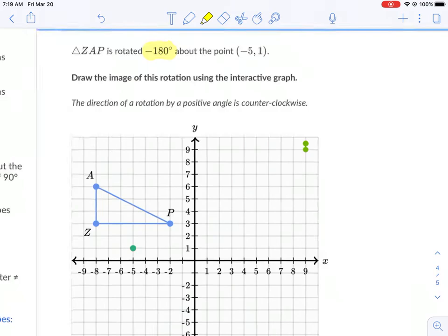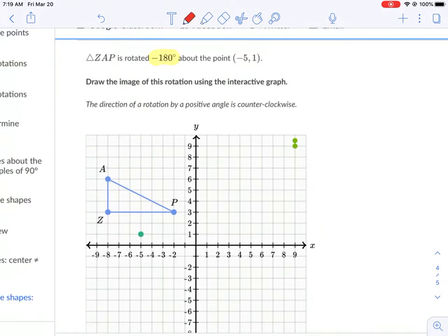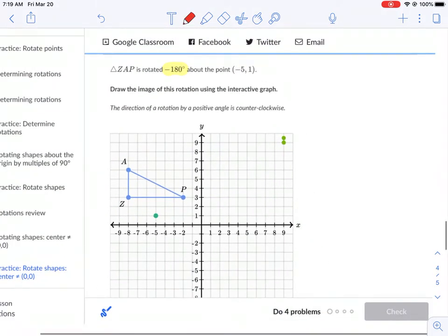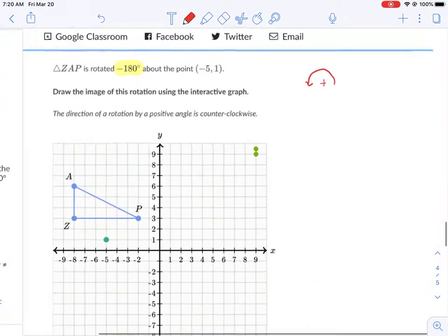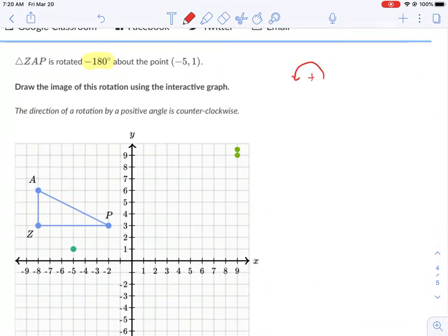But let's kind of break down some of the information we have. So negative 180 degrees. What we talked about in some of my previous videos is when we have a positive rotation, it looks like that. So you have a positive rotation, it moves in a counterclockwise direction, negative rotations go this way.